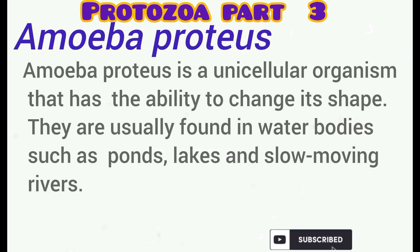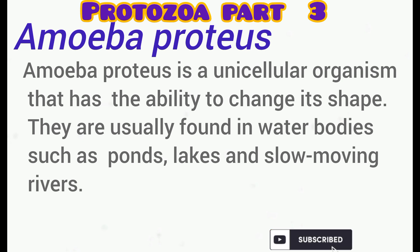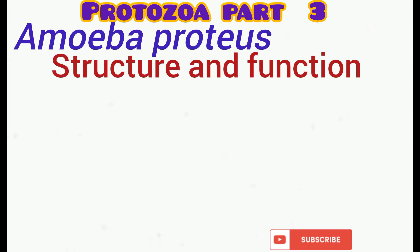Let's take Amoeba proteus as a representative of the phylum Amoebozoa. Amoeba proteus is a unicellular organism that has the ability to change its shape, due to the fact that the body is covered only by the plasma membrane. They usually live in water bodies such as ponds, lakes, and slow-moving rivers.